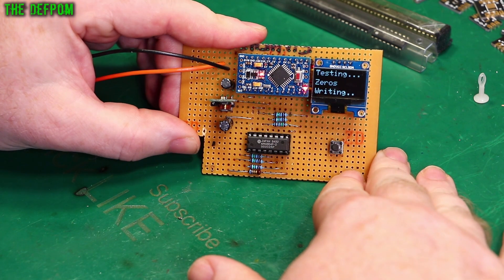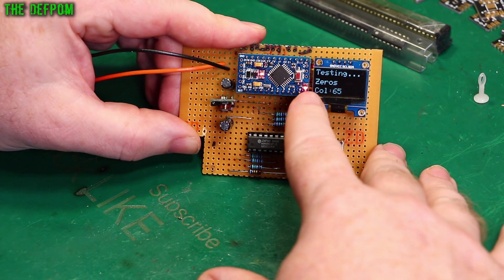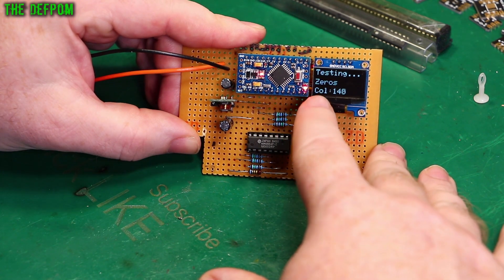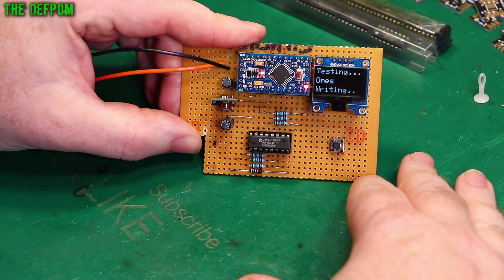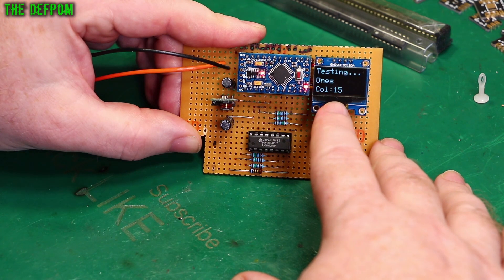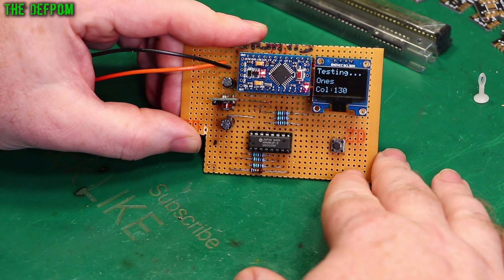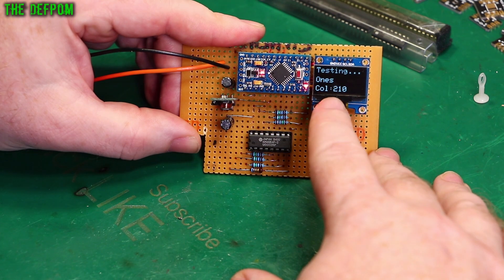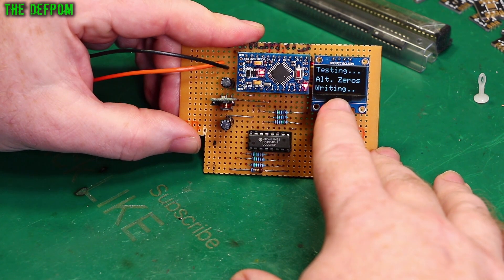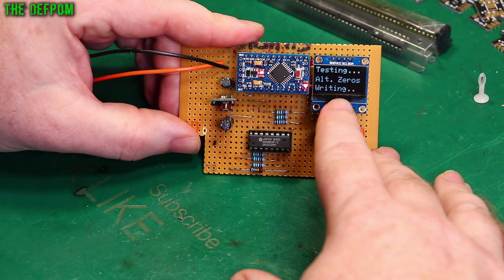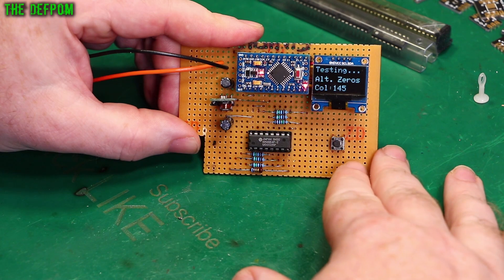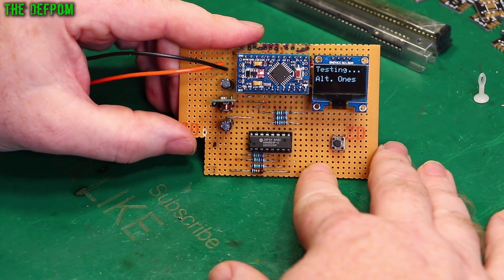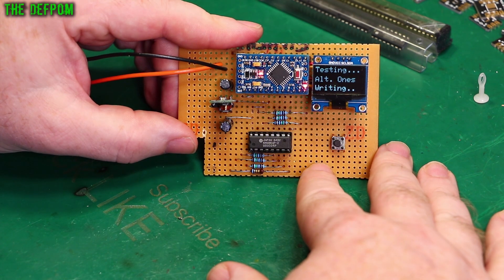So it tells you what it's doing here. So it's testing zeros and it said it's writing before. So it's writing the data to the RAM, now it's reading it back. Pass. Now it's testing ones. It's writing to the RAM, now it's reading it back. I've got this updating every fifth column just for speed. If I do every tenth column it's slightly faster again because obviously display updating is slowing it down. But it's a small compromise to see what the actual update is going on. So I think it's a worthwhile trade-off.